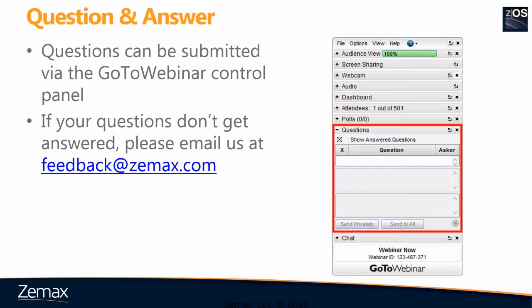Here's a question about how you model tissues in ZEMAX where there are changes in surface or refractive index. In optical design, for surface topography, it is very difficult unless you know the shape — you can use a polynomial surface type. For refractive index variations, you can use multi-configuration. For example, when you scan deep inside tissue at different depths, the tissue thickness or refractive index differs. You can use multi-configuration to optimize multiple configurations simultaneously.